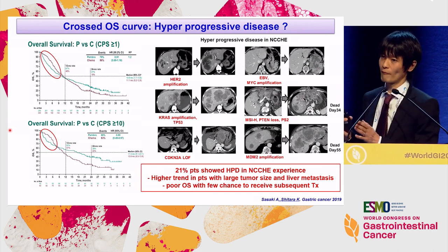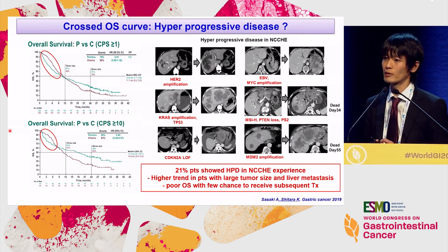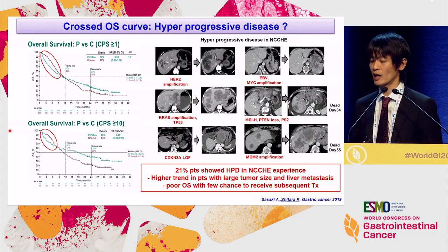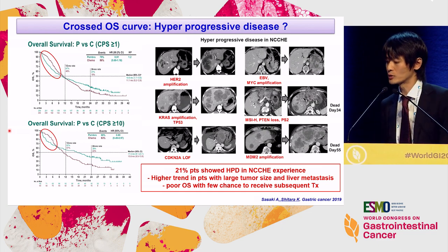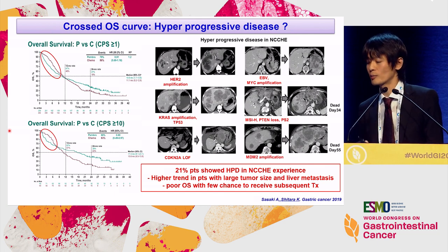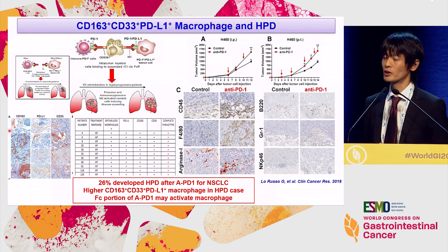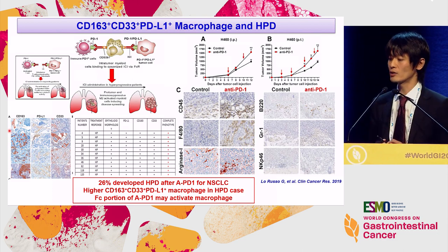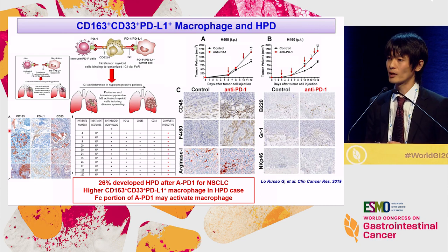A biomarker for non-responders may be equally important as one for responders. Rapid progression or hyperprogressive disease may partially explain the crossing survival curve, even in the CPS10 patient population. After approval of nivolumab, we experienced approximately 20 patients with this kind of rapid progression. These patients had some characteristics such as gene amplification, liver metastasis, and large tumor size, with very poor prognosis — less than two months — and very few chances to receive subsequent therapy. A recent report in Clinical Cancer Research suggested that PD-L1-positive macrophages may induce hyperprogression, potentially explained by a portion of anti-PD-1 activating macrophages or dendritic cells, which was reproduced in preclinical studies.